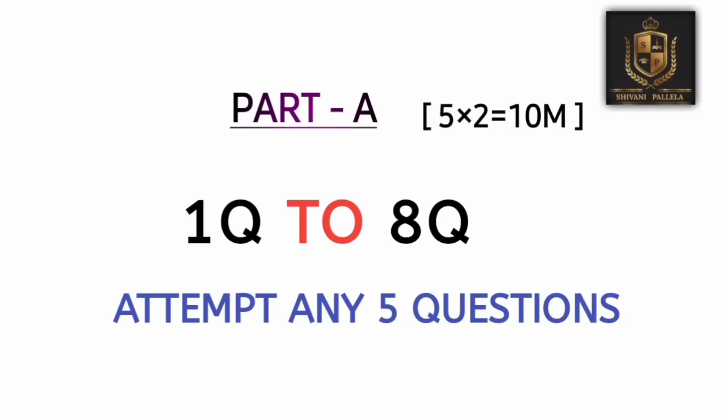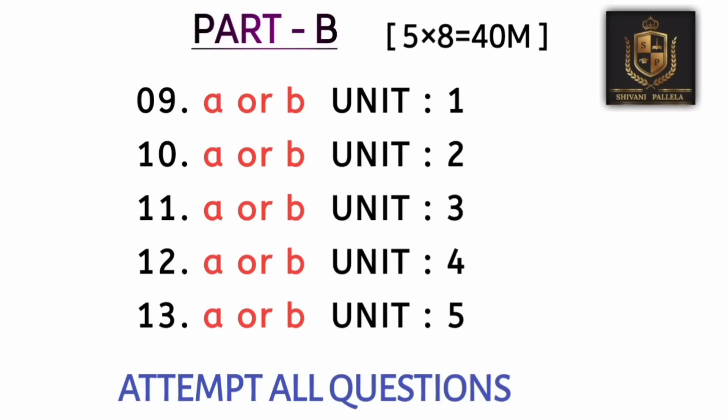Coming to the paper pattern: in Part A you need to attempt five questions out of eight questions, each carrying two marks. For two-mark questions, at least six to seven lines are compulsory. In Part B, five questions are given and you need to attempt all five, each carrying eight marks. Each question has an internal choice — either A or B, you attempt one. Questions 9 and 10 come from Units 1 and 2, and questions 11, 12, 13 come from Units 3, 4, and 5. For eight-mark answers, two sides — front and back — are compulsory.